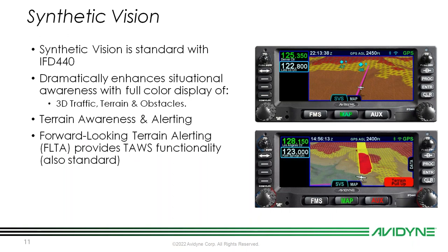Synthetic vision on the IFD is standard with the 440. It dramatically enhances situational awareness with a full-color display showing 3D traffic, terrain, and obstacles. This is where you'll see your terrain awareness and alerting. The forward-looking terrain alerting gives you a 30-second and 45-second depiction of terrain cautions based on trajectory, altitude, and speed. It's selectable, free, and standard — no extra TAWS upgrades needed.